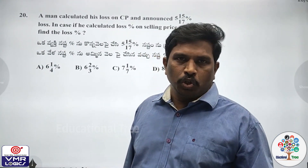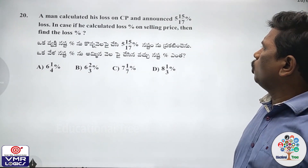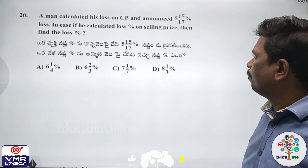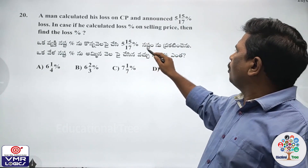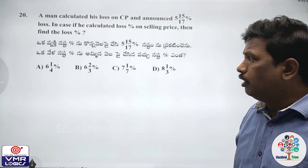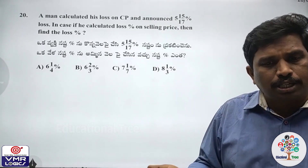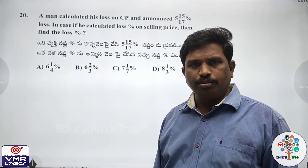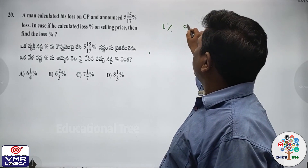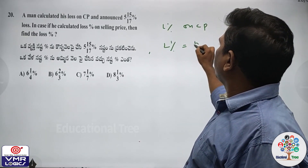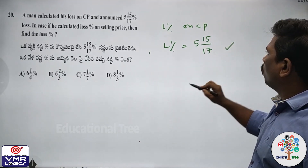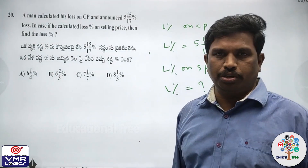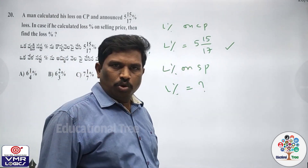Question number 20. A man calculated his loss on cost price and announced 5 and 15 by 17 percent loss. In case if he calculated loss on selling price, find the loss percentage.